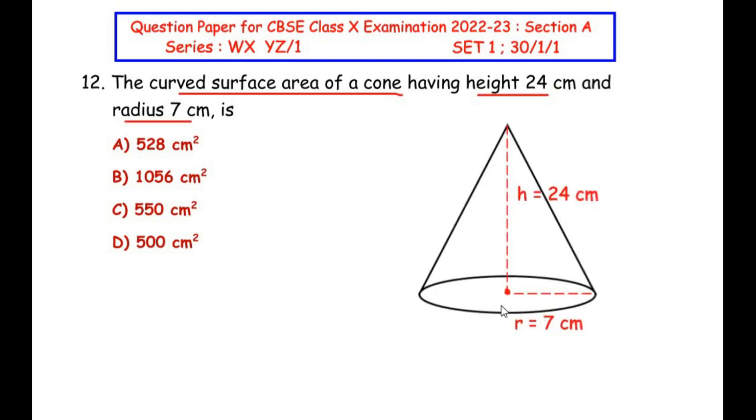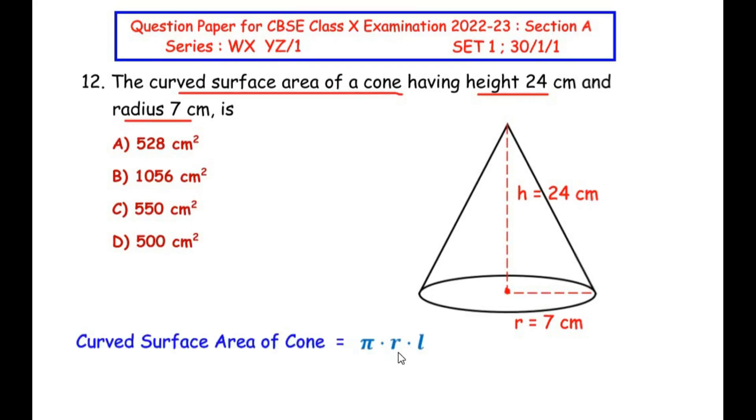So this is a cone and its perpendicular height is given that is 24 cm and the radius of the cone is given. Now the formula for curved surface area of cone is pi times radius times slant height. Slant height is this height of the given cone. Now the slant height is not given in the question but the perpendicular height is given.